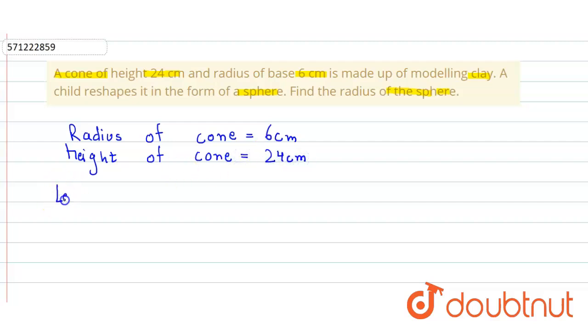Let the radius of the sphere be r. We know that the volume of both the cone and sphere will be equal.